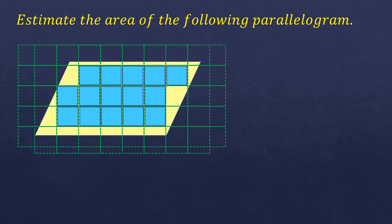Now counting the partially shaded squares, which will be counted as half each: 1, 2, 3, 4, 5, 6, 7, 8, 9, 10, 11, 12, 13, 14, 15, 16, 17, 18, 19, 20. There are 20 partially shaded squares.